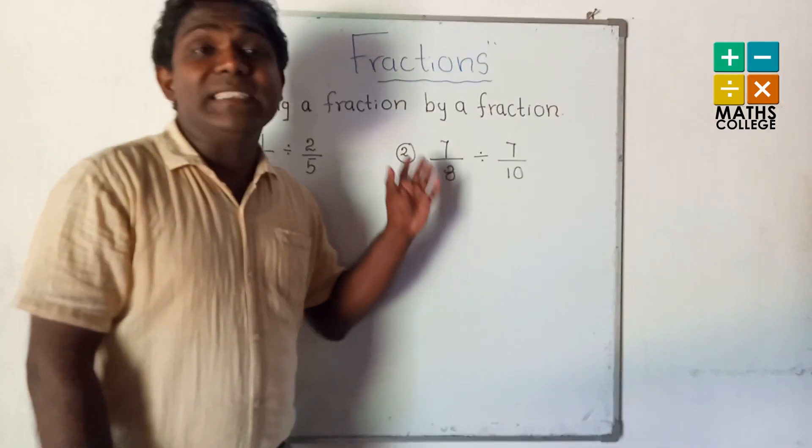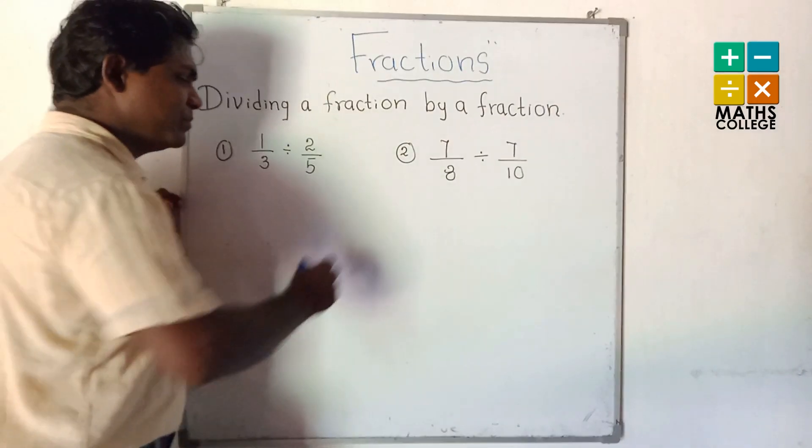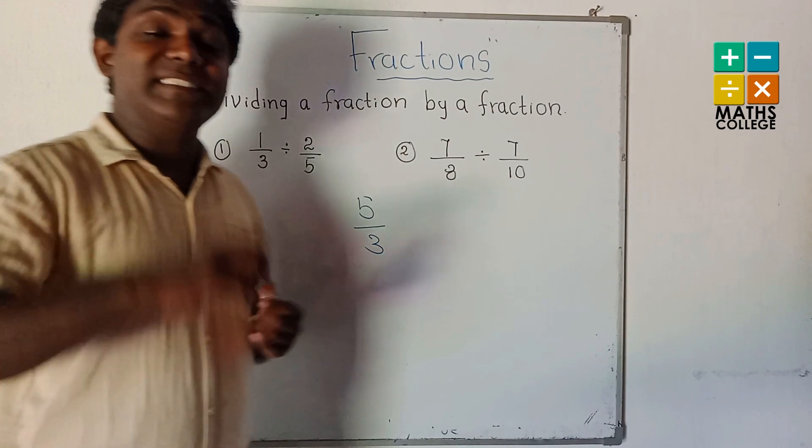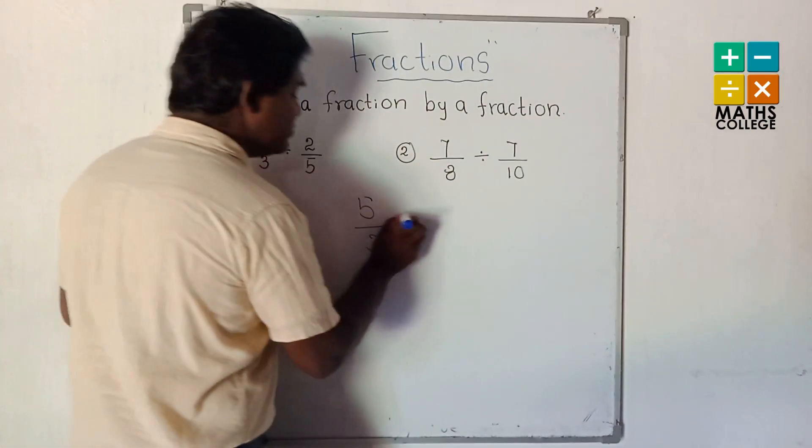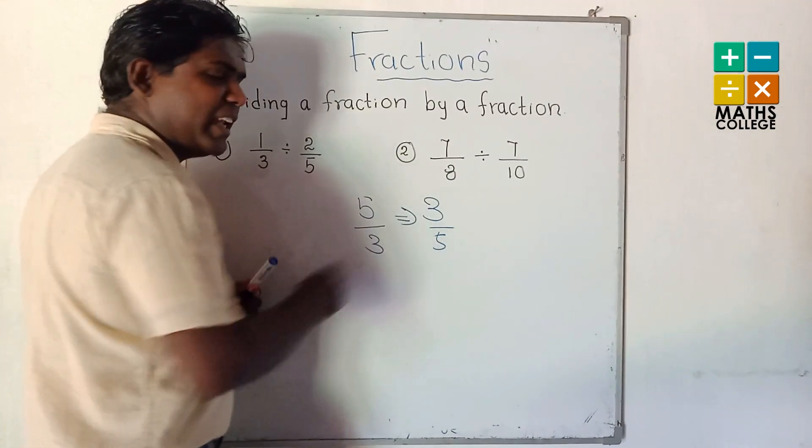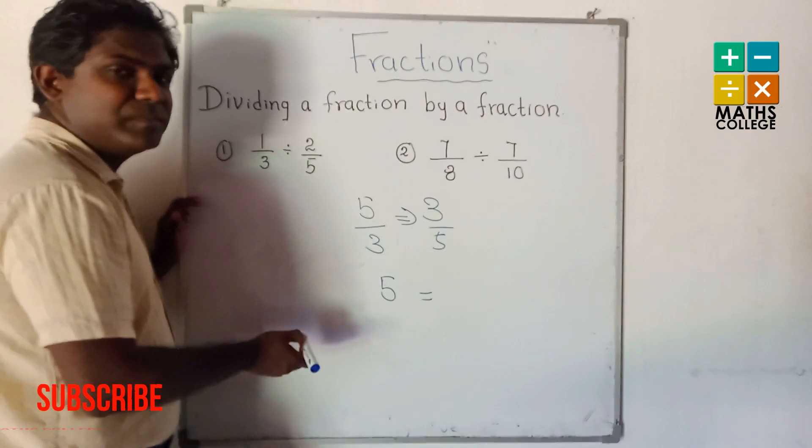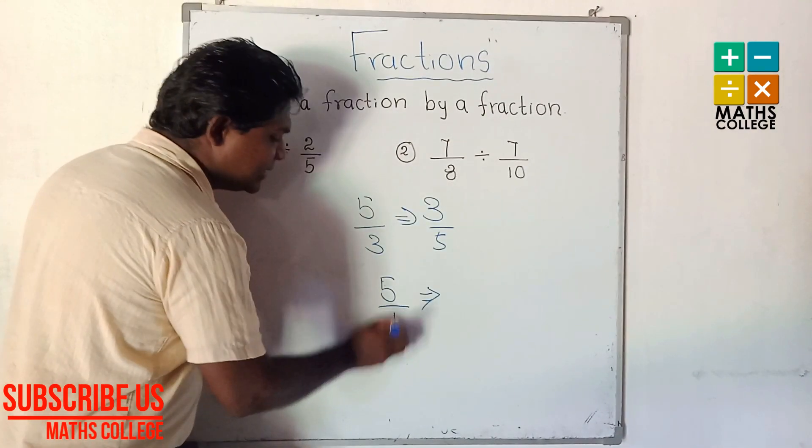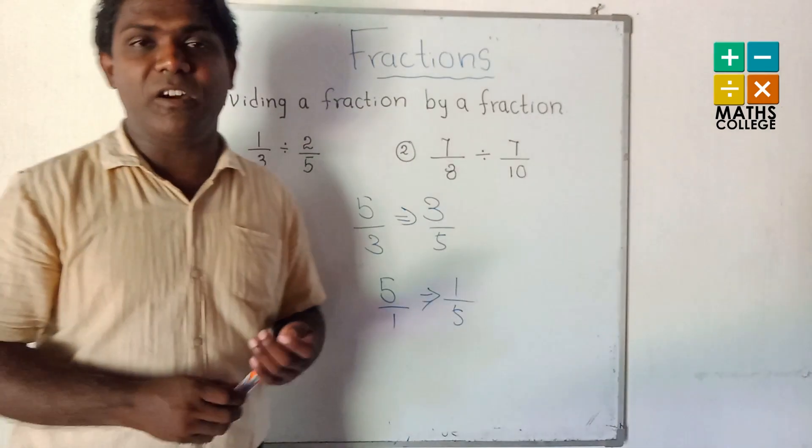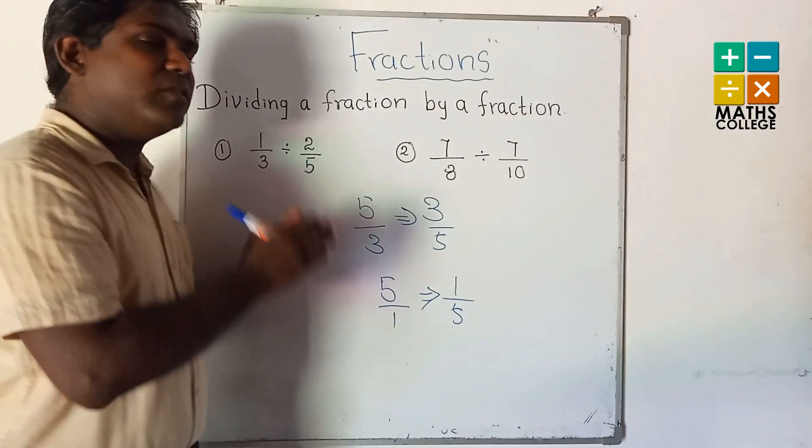Before we do these examples, I am going to remind you about reciprocal again. Reciprocal means if you have some fraction, you interchange the denominator and numerator. For example, 3 upon 5 becomes 5 upon 3. For a whole number, you can consider the denominator is 1. That means 5 becomes 1 upon 5 as the reciprocal.